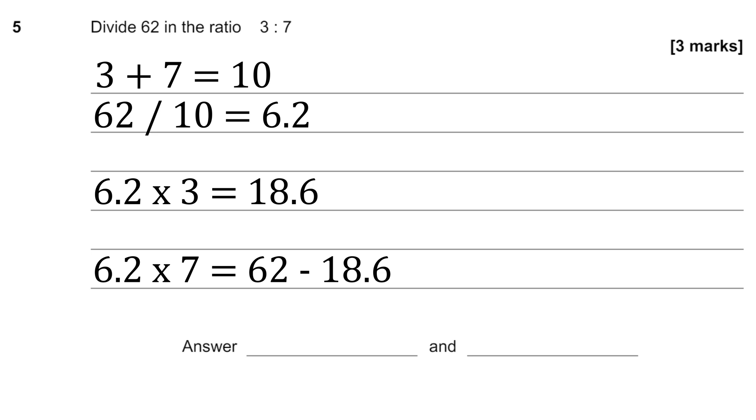So those are two ways to work out the other amount, because I realize 6.2 times 7 could be a bit hard to work out in the exam, and that's going to be equal to 43.4. So we've got 18.6 and 43.4.